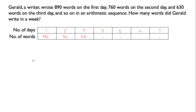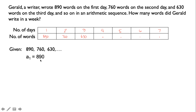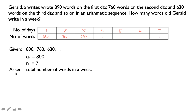Now let us identify our given values. We have the arithmetic sequence 890, 760, and 630. Our first term A sub 1 is 890. The number of terms n is 7, which is the number of days in a week. The problem is asking for the total number of words in a week, so we are going to use the formula for finding the sum of all the terms in a sequence.